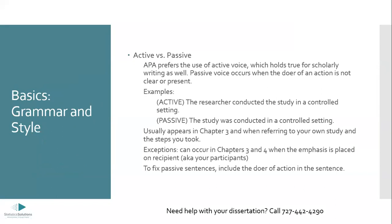Let's go over some of the basics to start off with: grammar and style. First thing we need to think about is the voice that we use when we write. APA prefers the use of active voice, which is true across most other scholarly forms of writing as well. Chicago prefers active voice, MLA prefers active voice. When passive voice occurs, that's when we are either hiding or not clearly presenting the doer of the action.